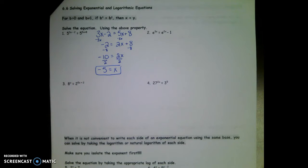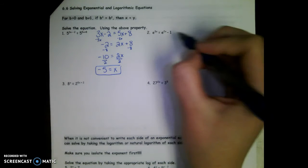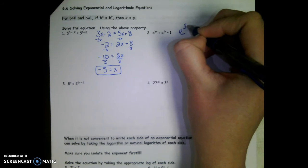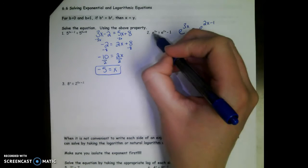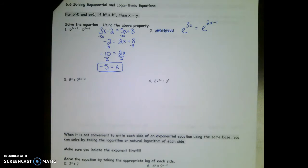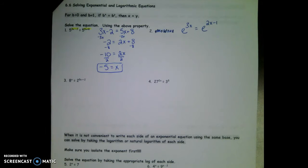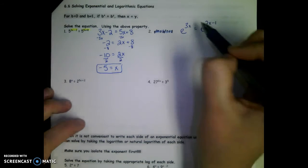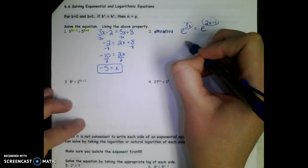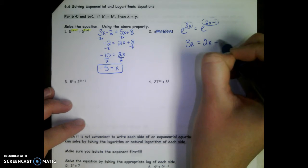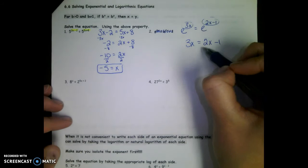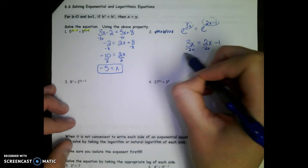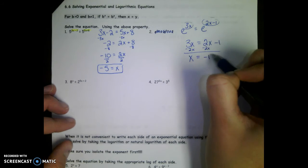Number two, there is a slight problem. It should be written e to the 3x equals e to the 2x minus 1. That minus 1 is supposed to be in the exponent. Sorry about that. So we have e to the something equals e to the something else, so we can set up the equation 3x equals 2x minus 1 and solve. I would subtract 2x on both sides to get x equals negative 1.